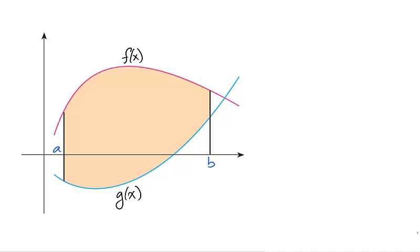We begin by finding the area between two curves, f and g, on the interval [a, b]. Let's assume that both f and g are continuous on the interval [a, b], and that f is greater than g on this interval. We are interested in calculating the area of the shaded region, so we begin by considering an approximation of the area by rectangles.